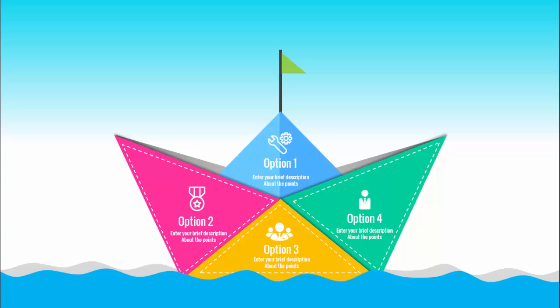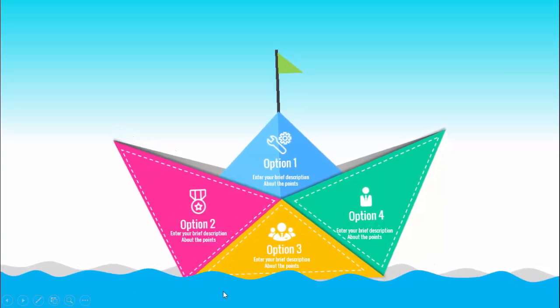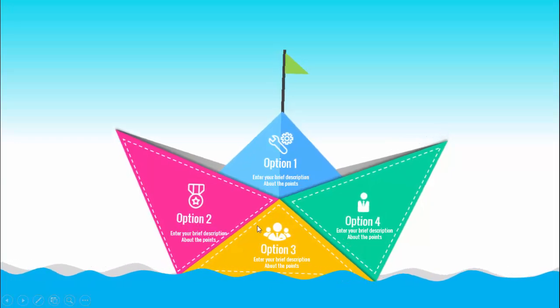In today's tutorial I'm going to show you how to create this four options paperboard infographic slide in PowerPoint. I have designed this board with option one having a different icon and color combination, then option two, option three, and option four using four different colors. At the bottom I've added a water effect — when you click, the water starts moving and the board looks like it's floating on the water.